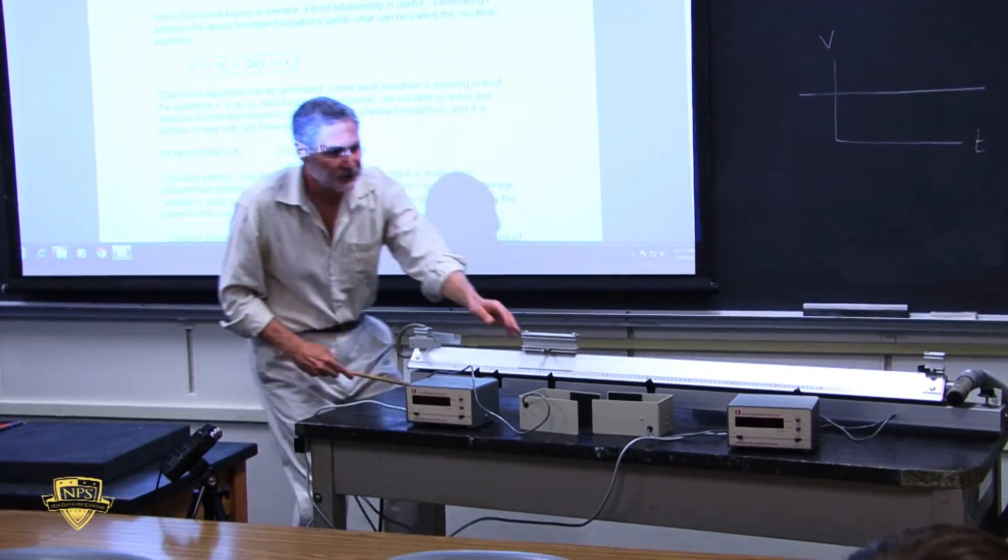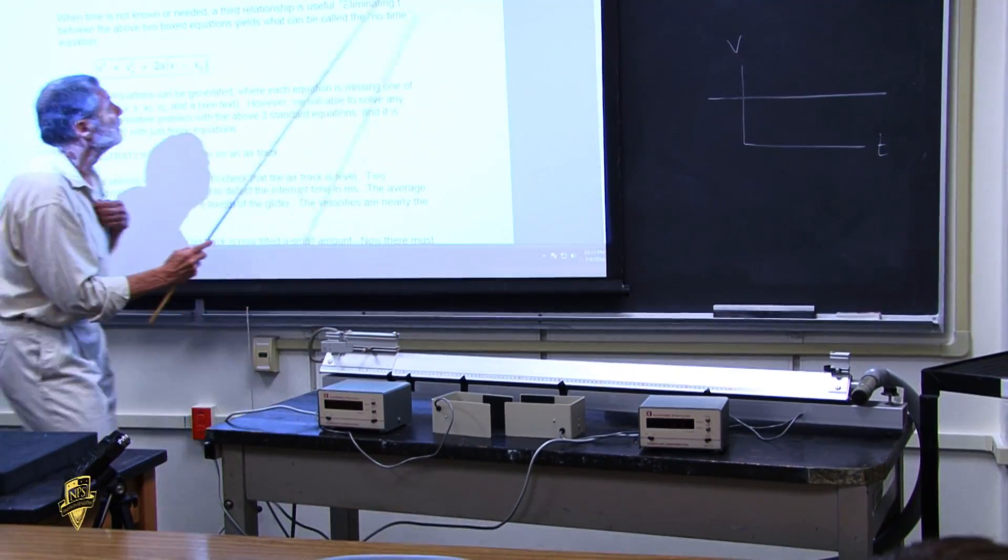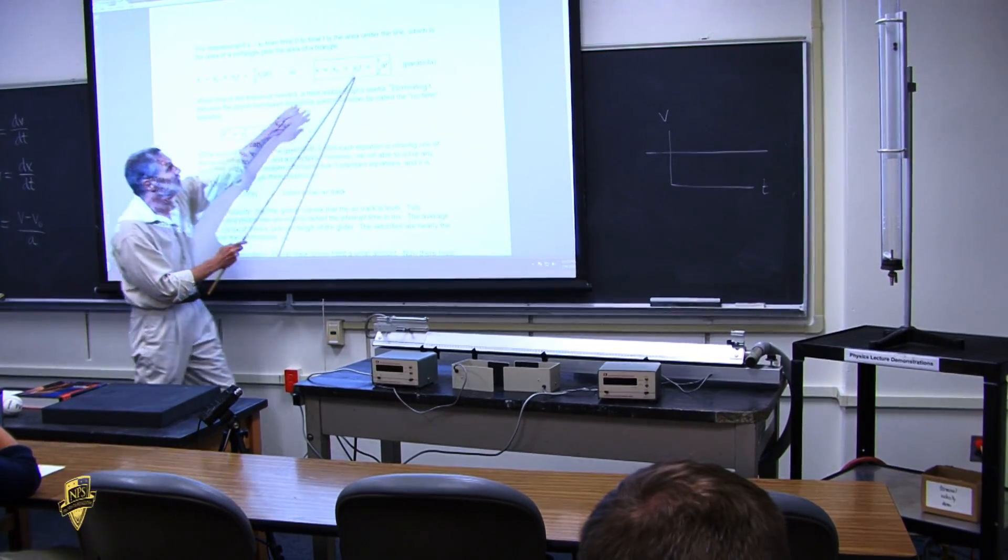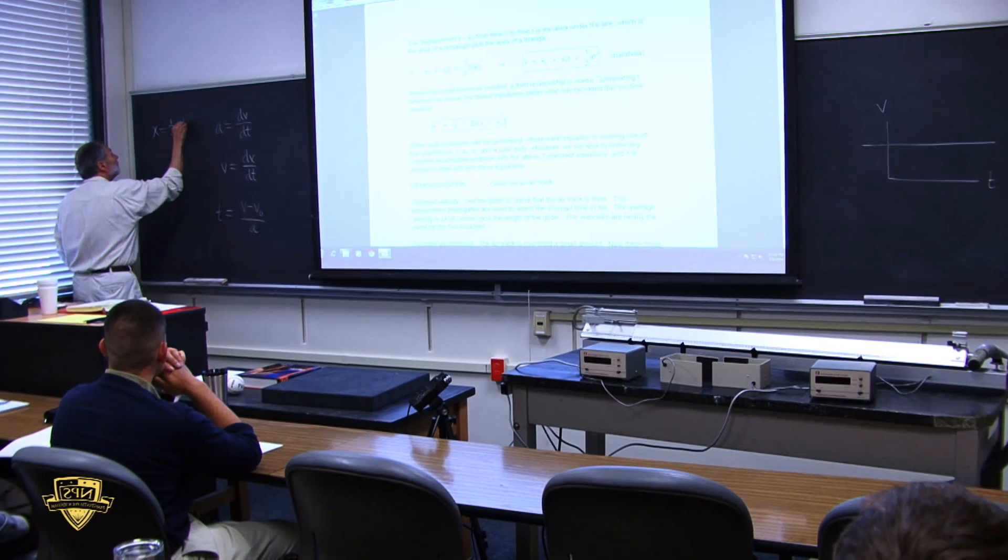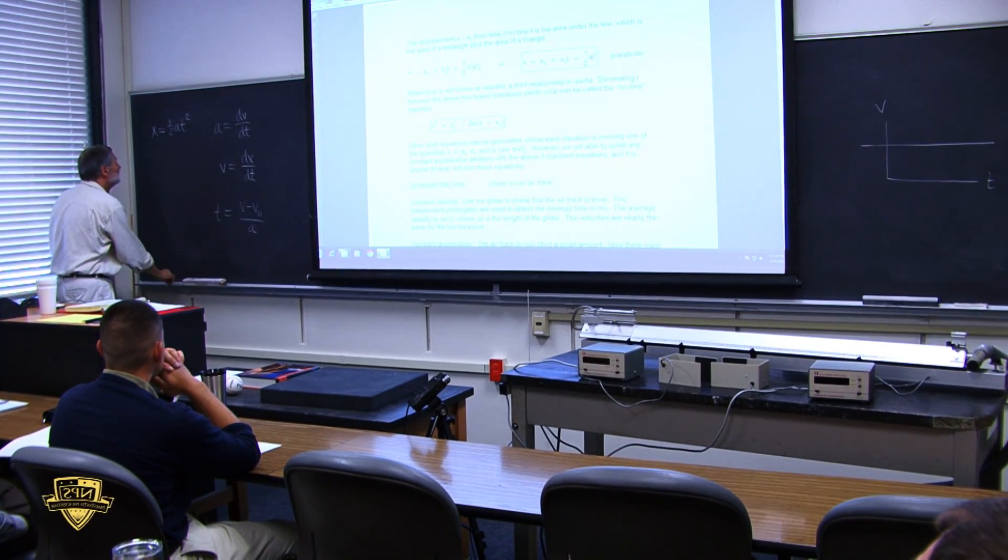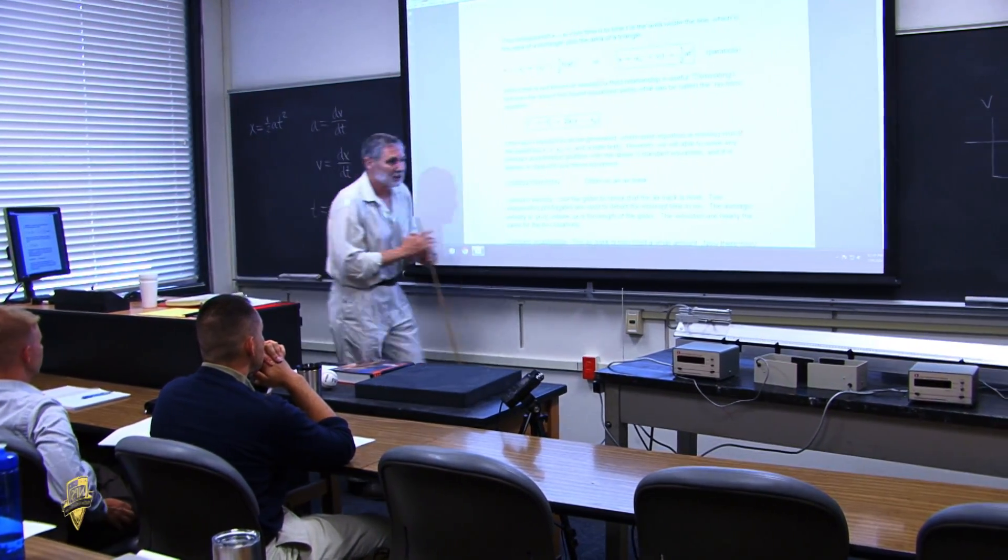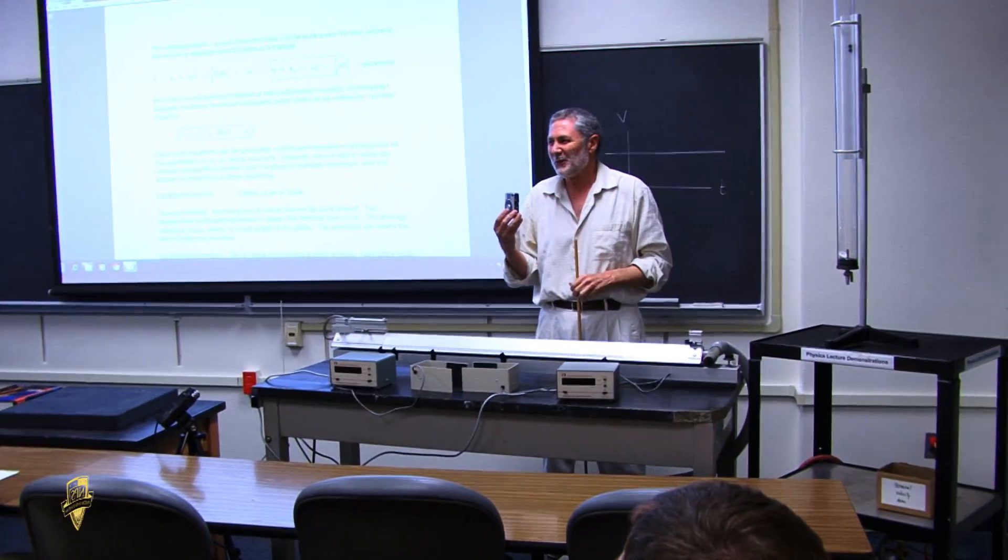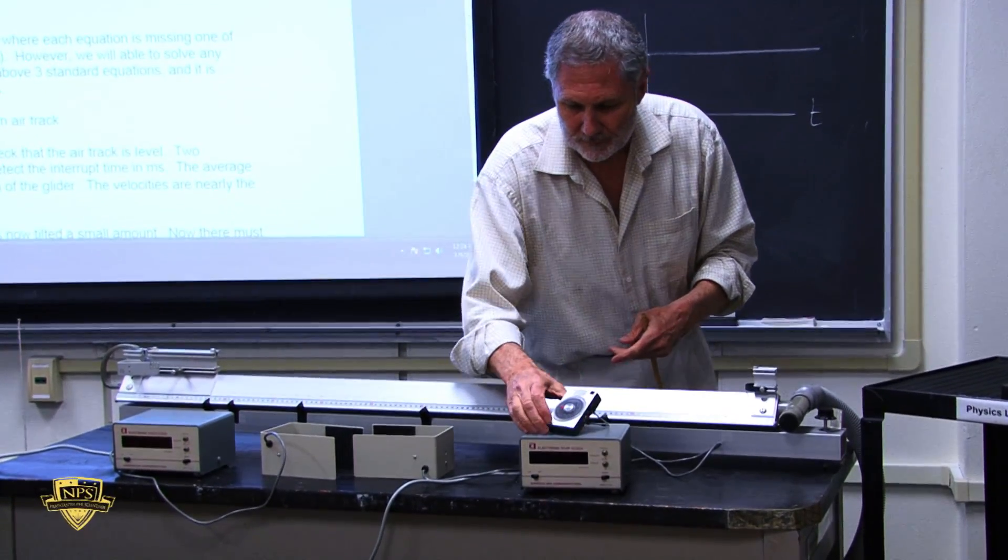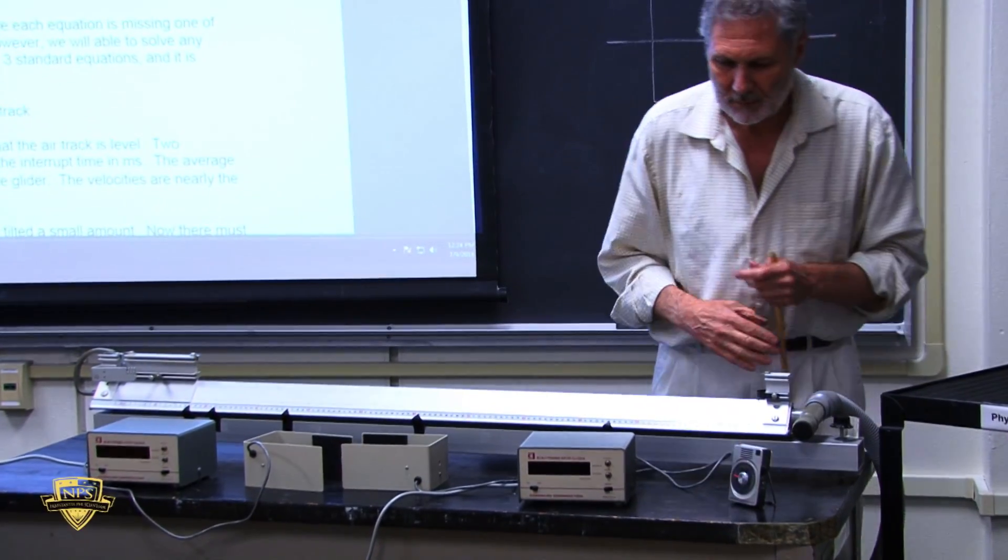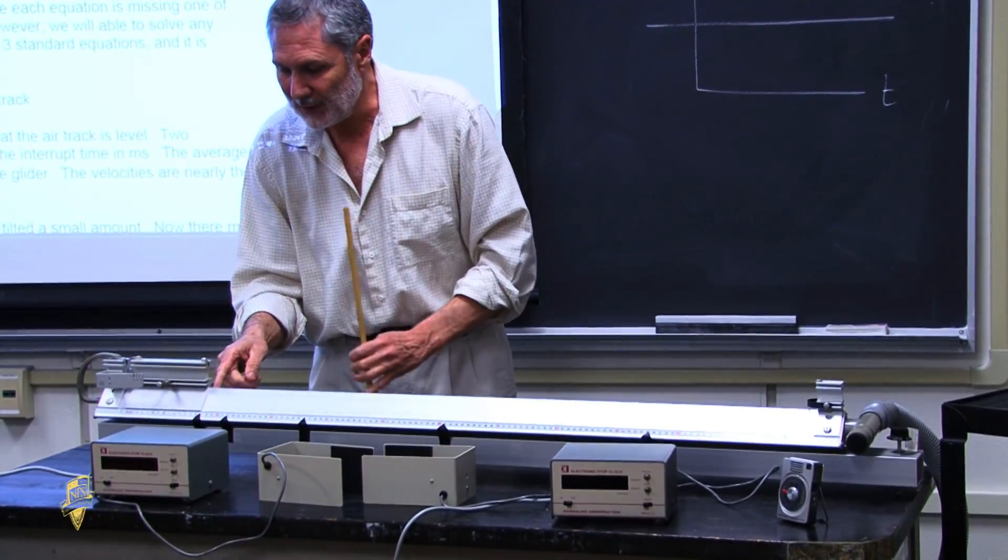At time t equals zero, we're going to call this x equals zero. See the black tape? That's going to be released from rest. For constant acceleration, x equals one-half a t squared tells you what the position is as a function of time. Galileo actually derived or somehow understood this. Remember this old metronome? It's now clicking off seconds. I've calculated from that formula where it should be at the end of each second.